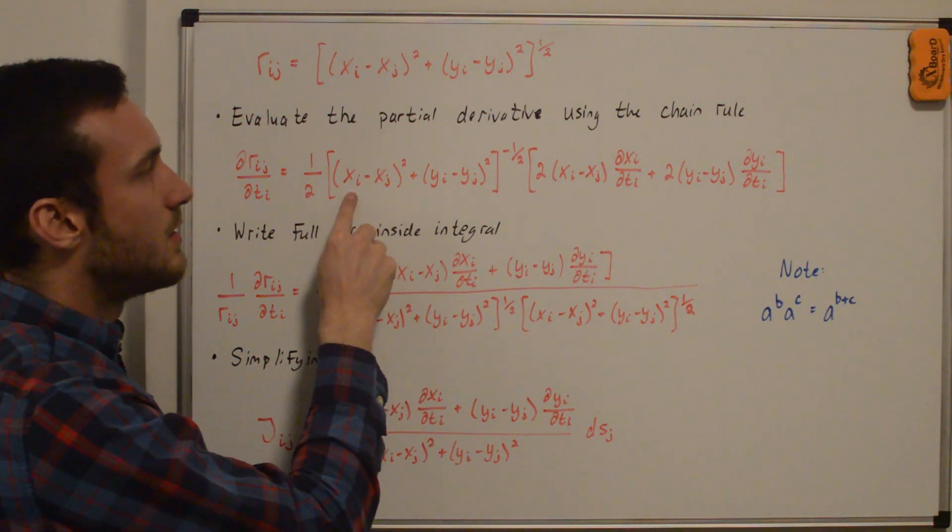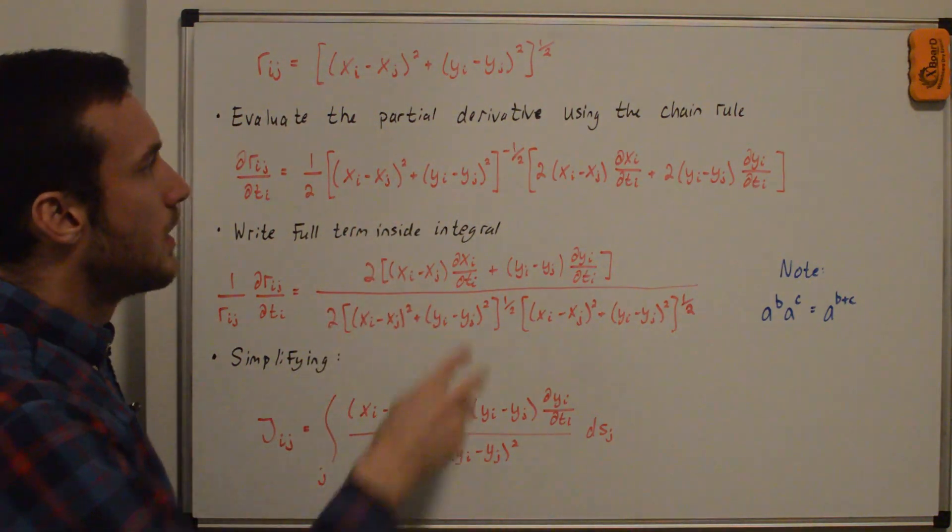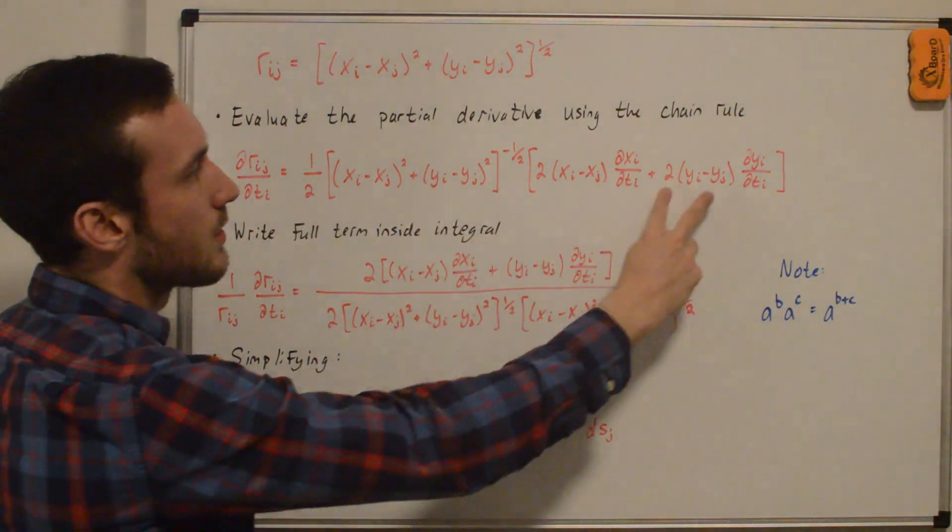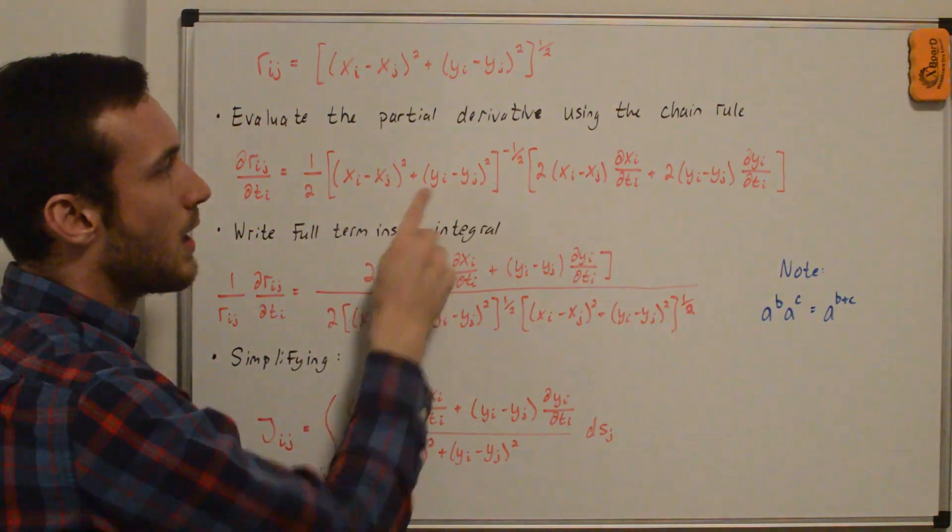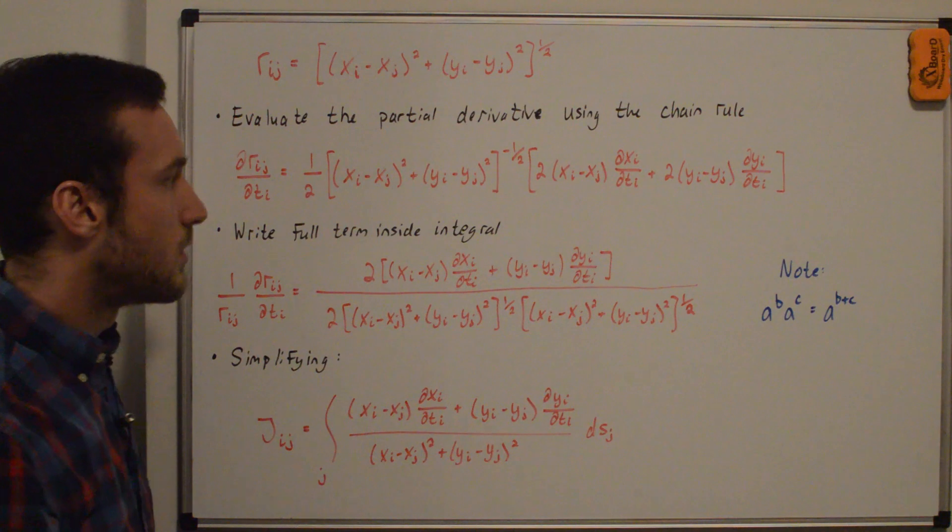And then the terms in here, so that's dxi/dti, and dxj/dti is equal to zero, because they have different subscripts. And then here, we have two times this. And then dyi/dti, and dyj/dti is equal to zero.